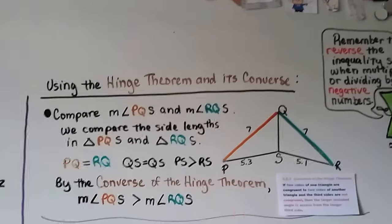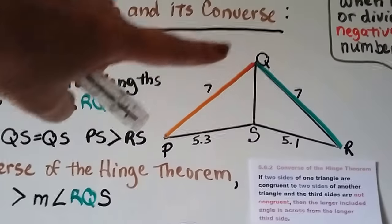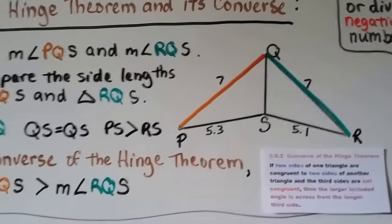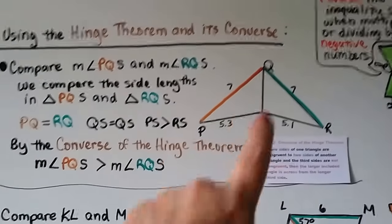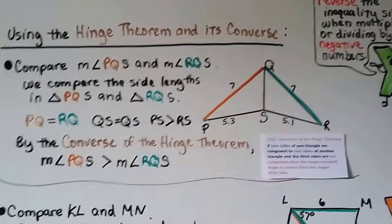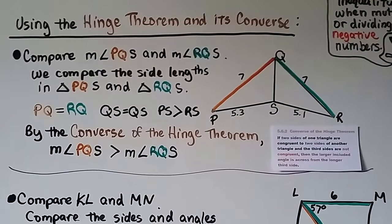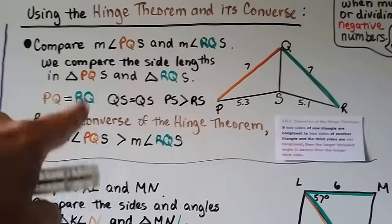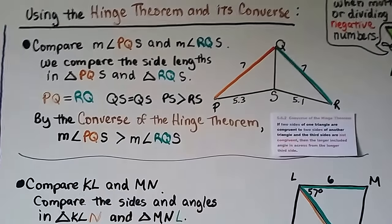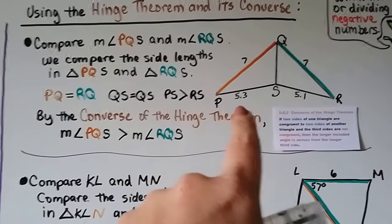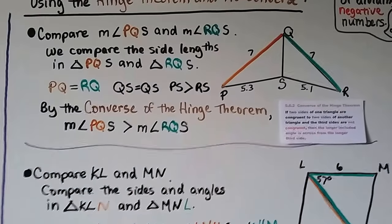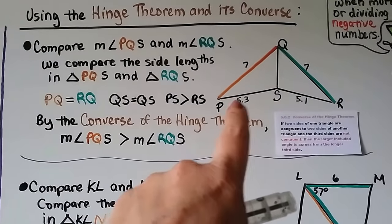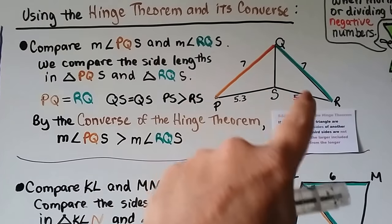Using the Hinge Theorem and its Converse, take a look at this drawing. PQ is 7 and QR is 7, but PS is 5.3 and SR is 5.1, so PS is larger than SR. We need to compare the measure of angle PQS and angle RQS. In triangle PQS and RQS: PQ equals QR (both 7), QS equals QS by the Reflexive Property, and PS is greater than RS (5.3 vs. 5.1). So by the Converse of the Hinge Theorem, the measure of angle PQS is greater than the measure of angle RQS.